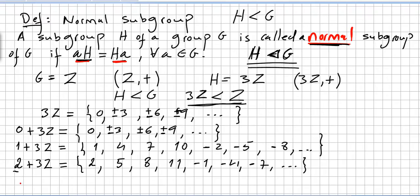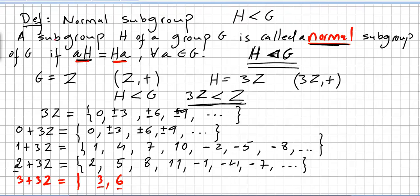It is pointless to do 3 plus 3Z, because 3+0=3, 3+3=6 — you are going to get the same set as 0 plus 3Z. So these three are the left cosets of the multiples of 3. The operation here is addition, and these are the left cosets.